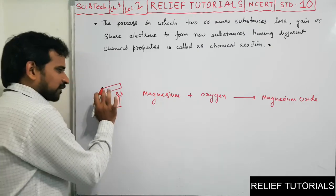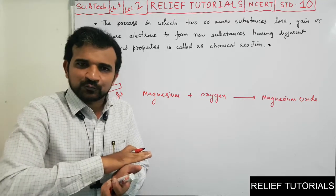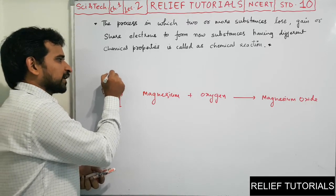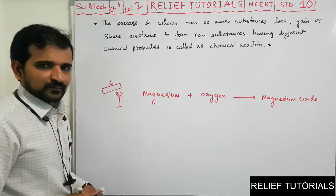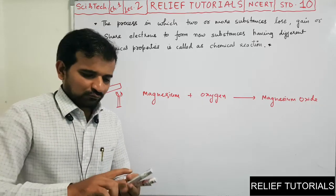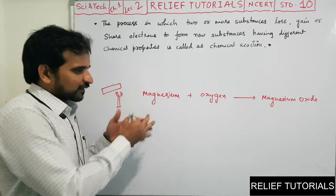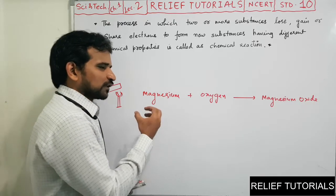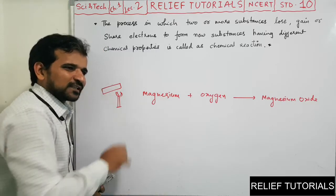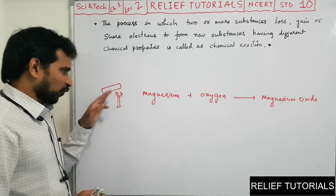Before doing this experiment, you know that the magnesium strip is made smoother. We have to remove the layer of magnesium carbonate from it. Before burning the magnesium ribbon in the presence of oxygen, we have to remove the layer of magnesium carbonate which is naturally formed over the magnesium strip, and then only we can start the reaction. Because we need magnesium to react with oxygen, not magnesium carbonate. So with the help of cloth, we remove that layer.